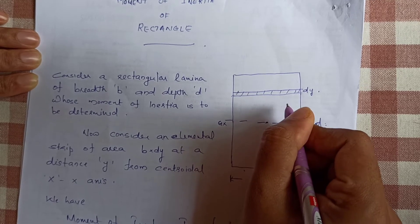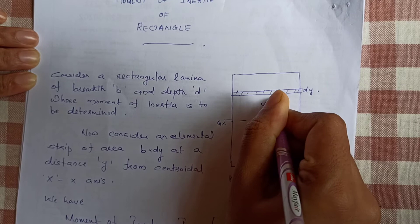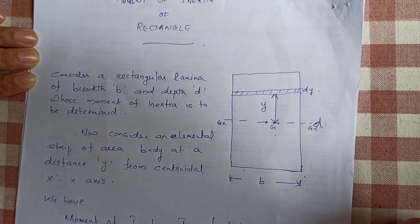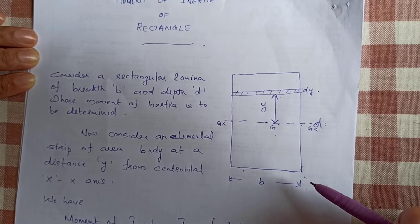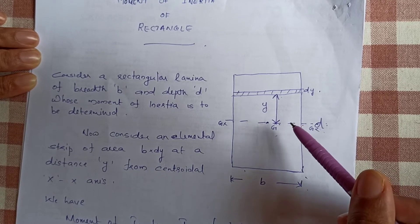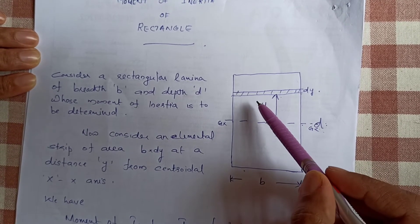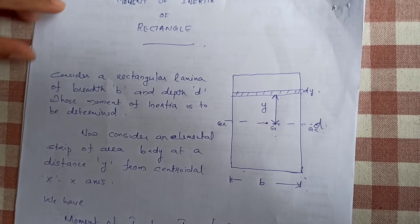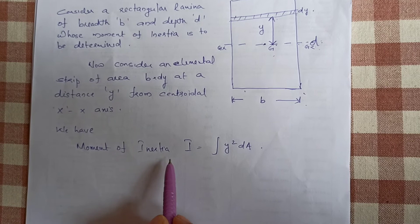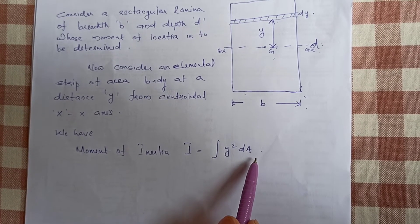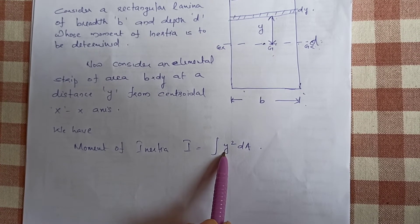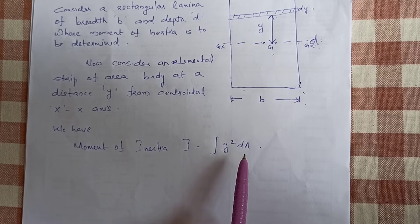Consider an elemental strip at a distance y from the centroidal x-axis. This strip has a width. The moment of inertia of a rectangle of width B and depth D — this is what we call the moment of inertia equation. Moment of inertia I equals the integral of y² · B, which is the product of area and the square of the distance between the reference axis and the center of the area.